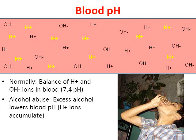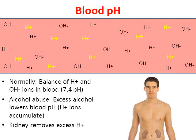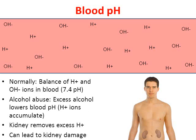If a person stops drinking responsibly, over time your kidneys are supposed to remove those excess amounts of hydrogen ions, which brings your pH back to normal. The problem is people who have a lifetime of alcohol abuse often have kidney damage. So they're not able to remove those hydrogen ions and their blood pH can be off, which could cause some very serious health effects.